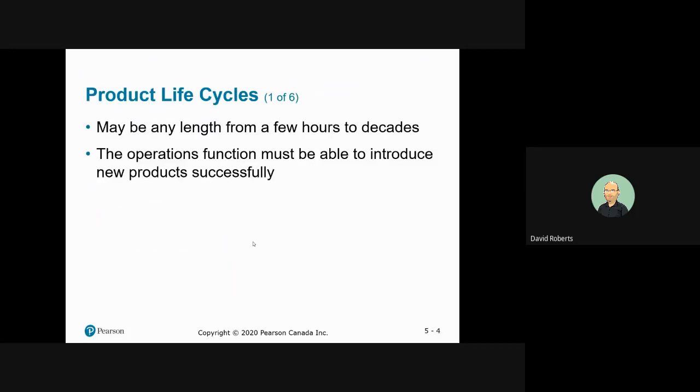Product life cycles, as you can see by the definition, may be very short from a few hours to decades long. In the case of certain items you're familiar with, cars, product life cycle is five years for cars and three years for cell phones.